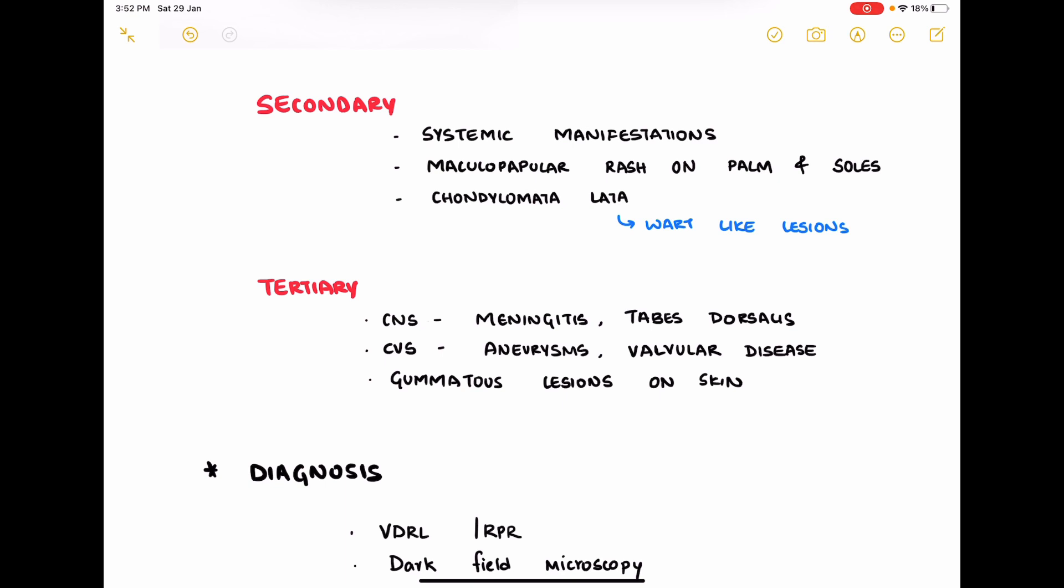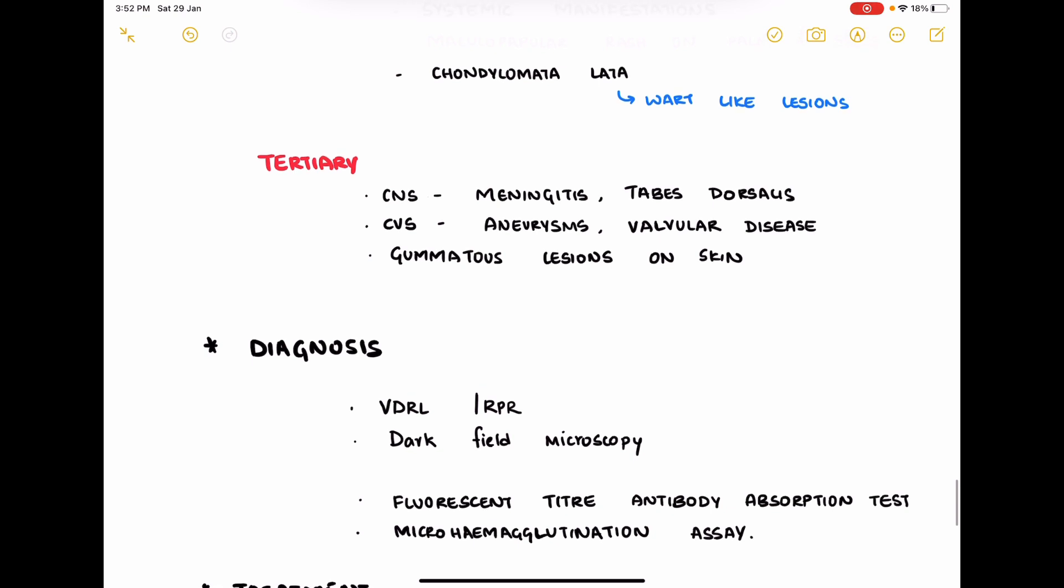Diagnosis can be done with VDRL and RPR, which are not specific tests although they're very good for screening. Dark field microscopy can be done. Fluorescent treponemal antibody absorption test and microhemagglutination assay are specific to Treponema pallidum.